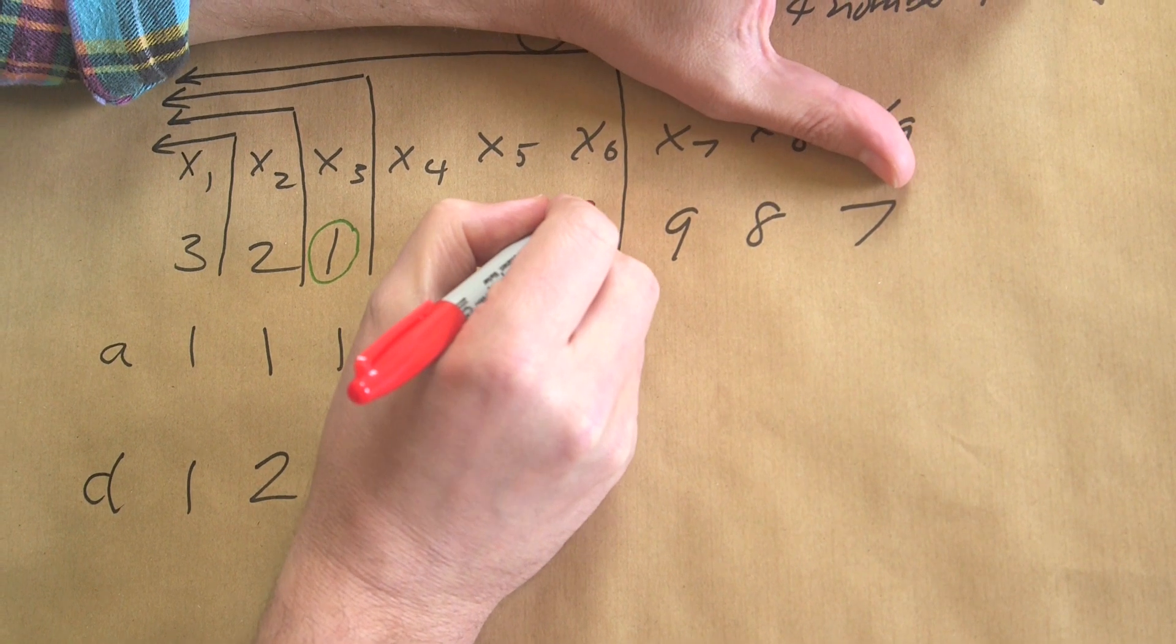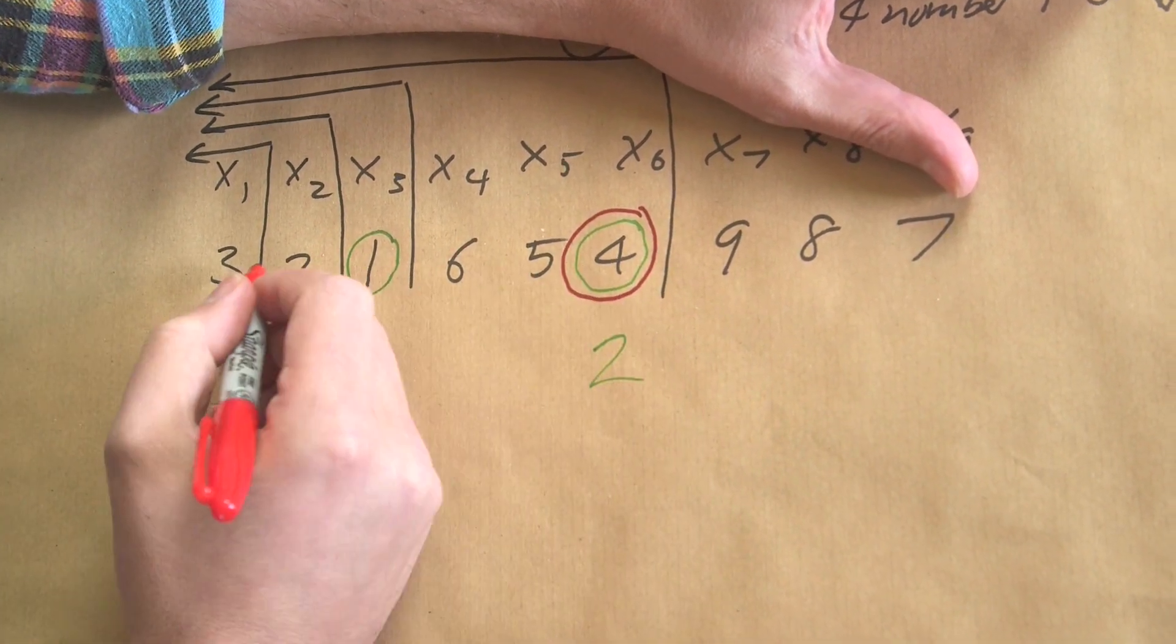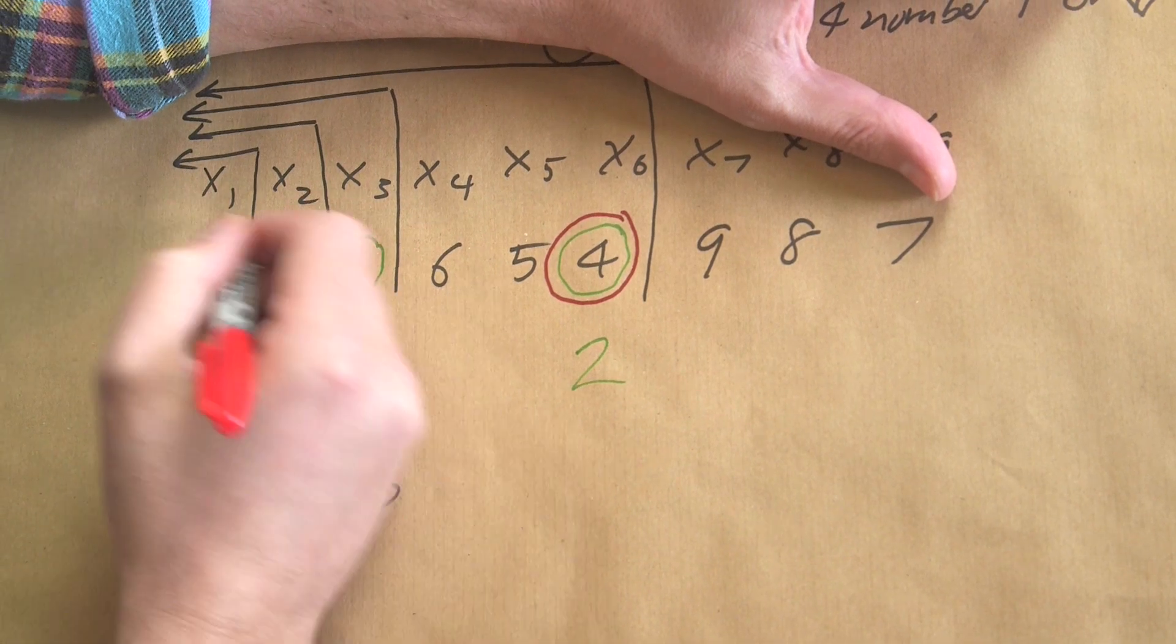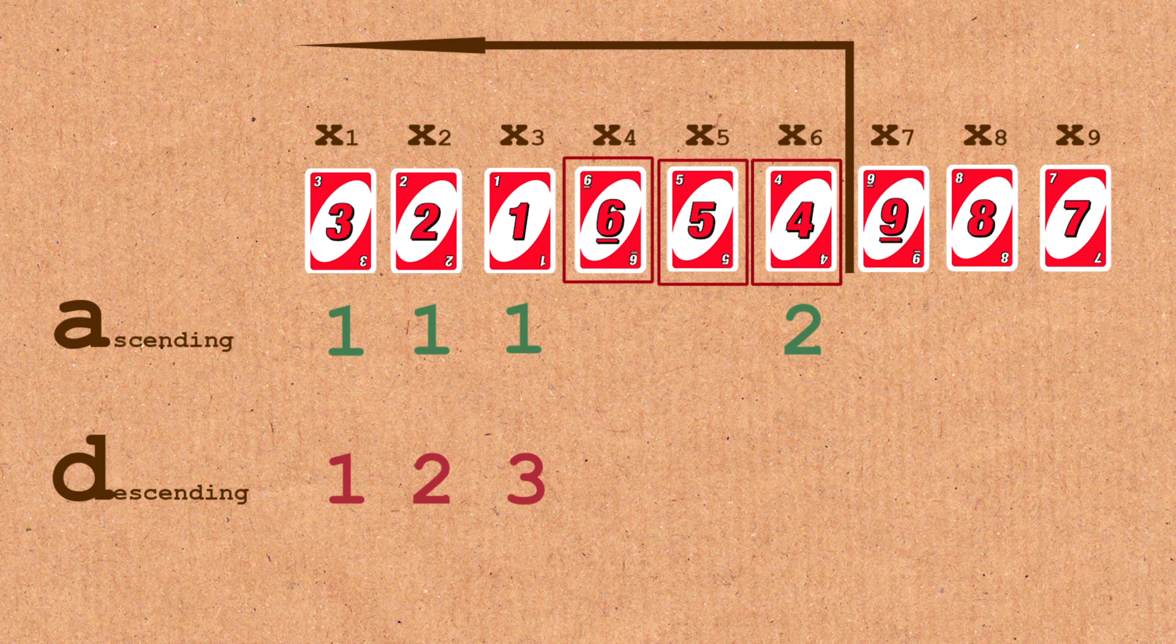But descending, I'm going to use this in red. We can see that four, well, that's greater than all these numbers, so that's not descending, but we do have six and five. So that is three.